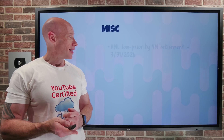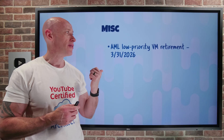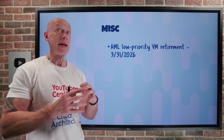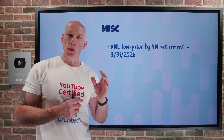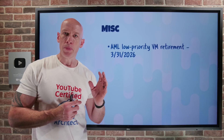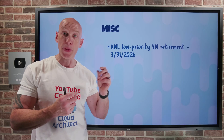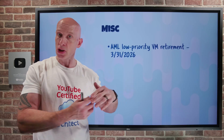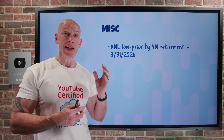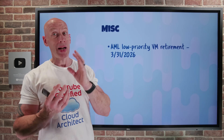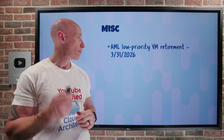On the miscellaneous side: the Azure Machine Learning low-priority VM capability is being retired at the end of March. This let you take advantage of Azure's unused capacity at a cheaper price, but you could get kicked off — just like spot instances — so you had to handle interruptions. You need to move the cluster to dedicated VMs before that time, or it will just stop working.